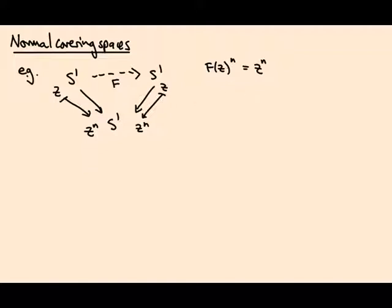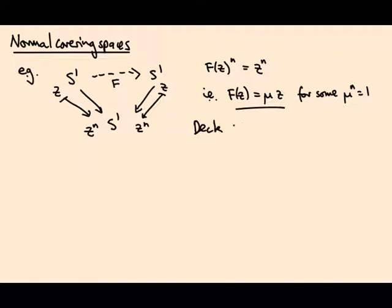So f of z is related to z just by multiplication by some n-th root of unity, where mu is one of the n-th roots of unity. This defines a covering transformation, and any covering transformation has to have this form. So we see the deck group of this cover, which I'll call p_n, is just the group of n-th roots of unity — in other words, the group ℤ/n, the cyclic group of order n.